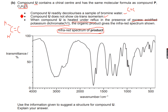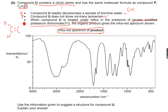Let's gather all the information we have about compound U. First, compound U contains a chiral center. Second, U contains a carbon-carbon double bond. Third, that double bond must be terminal because it's not showing cis-trans isomerism. Fourth, the oxygen can be from a primary alcohol, a secondary alcohol, or an aldehyde — so there are three possibilities for that oxygen.